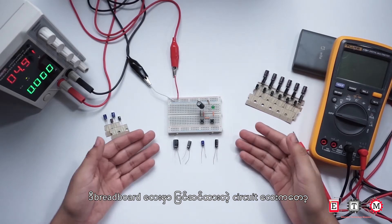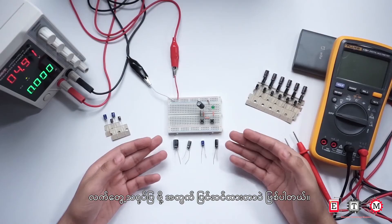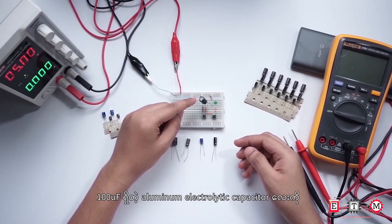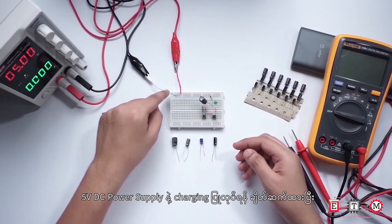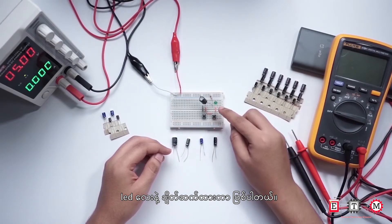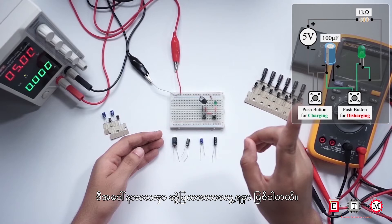The capacitor can charge and discharge repeatedly. In this demonstration, a microfarad aluminum electrolytic capacitor with 50V DC power supply will charge and discharge through an LED. Please watch and comment below.